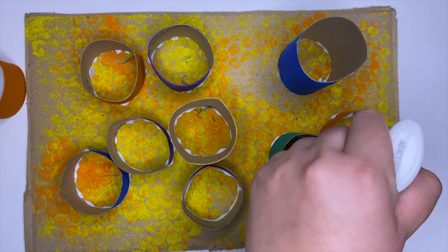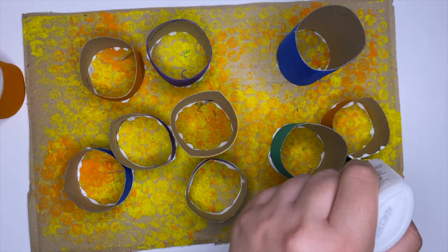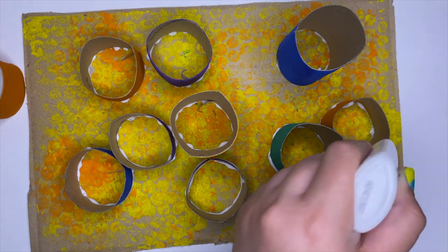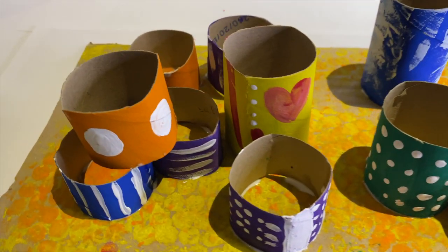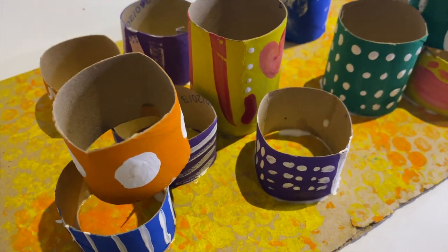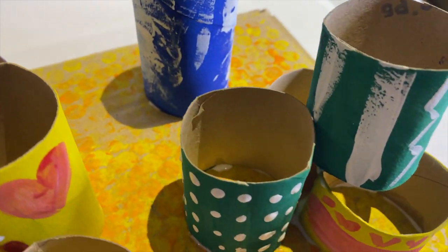Once you're happy, you're going to start gluing everything down with glue, whatever glue you have at home. You can use a paintbrush to apply the glue or you can apply the glue straight from the bottle. And once I was done gluing, I also painted on my sculpture because I wanted to make it look even more beautiful.